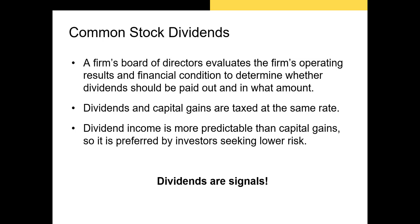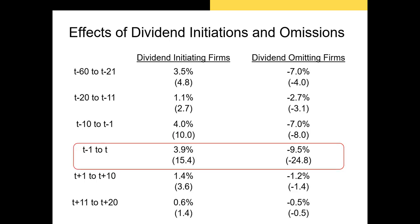Decreasing or outright cutting the dividend signals to investors that the firm's board has doubts about its future profitability. When a firm cuts, suspends, or eliminates a dividend, the investor response can be dramatic. I took this data from a famous paper by Healy and Palapu in 1988, one of the early papers examining investor response to dividend initiations — when the firm starts paying a dividend — and dividend omissions, when the firm cuts or completely eliminates it.